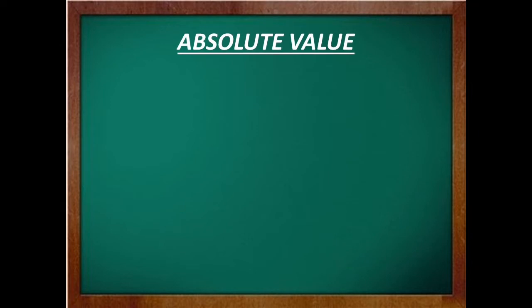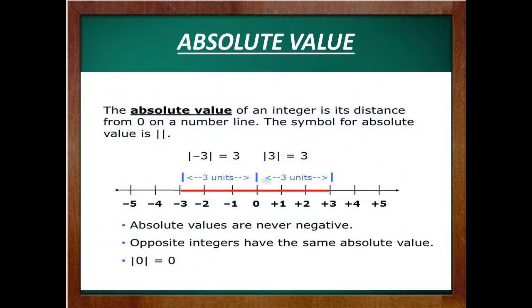Next is absolute value. The absolute value of an integer is its distance from 0 on a number line. The symbol for absolute value is two vertical bars, and inside these two vertical bars, we write the integer. For example, the absolute value of minus 3 equals 3, and the absolute value of 3 equals 3. Please note that absolute values are never negative. Opposite integers have the same absolute value, and the absolute value of 0 equals 0. Hopefully, it is clear to you.